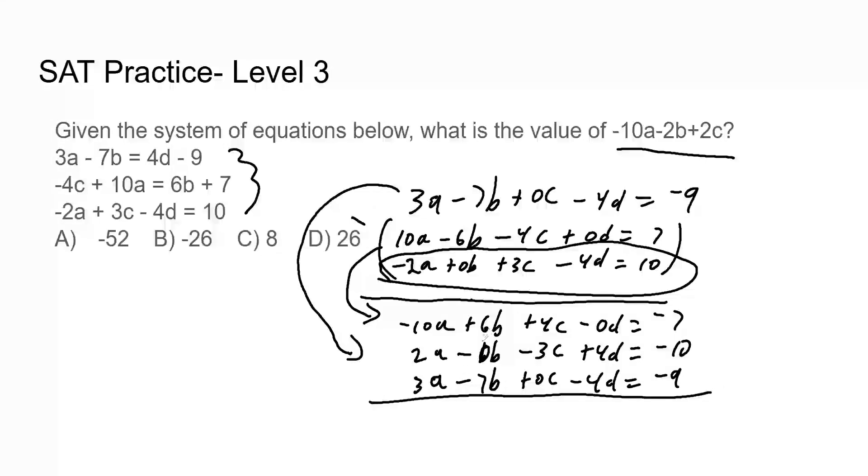Now I'm going to add them all up. And let's just see what happens. The A's will be negative 5A. The B's will be negative B. The C's will be 1C, 1C, so plus C.